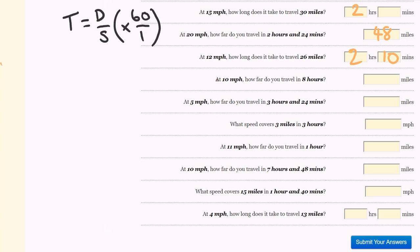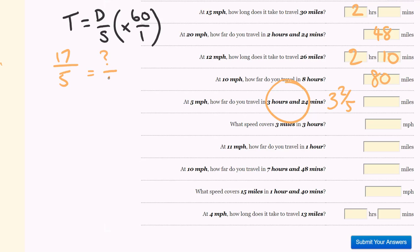At 10 miles per hour, how far do you travel in 8 hours? 1 hour is 10 miles, 2 hours is 20 miles, times 8 you're going to go 80 miles — a nice easy one. At 5 miles per hour, how far do you travel in 3 hours and 24 minutes? 12 goes into 24 twice and into 60 five times. As an improper fraction: 3 times 5 is 15, plus 2 is 17, over 5. This equals the distance over the speed of 5 — from 5 to 5 we times by 1, so 17 times 1 gives us 17 miles.